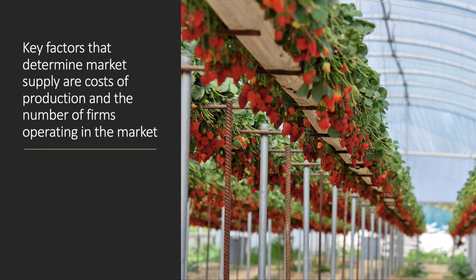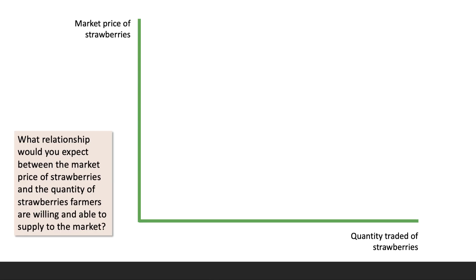The key factors that determine market supply for most products are the cost of production and also the number of firms operating in the market. Let's go back to our XY space — we have the market price of strawberries on the y-axis and the quantity traded on the x-axis. The question we ask is: what relationship would you expect between the market price and the quantity of strawberries farmers are willing and able to supply to the market? Usually we expect a positive